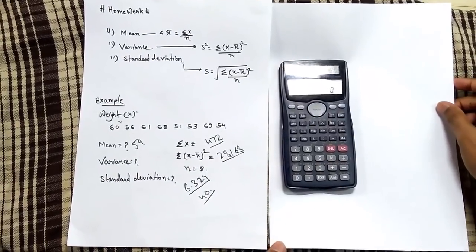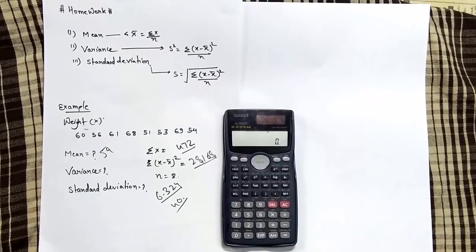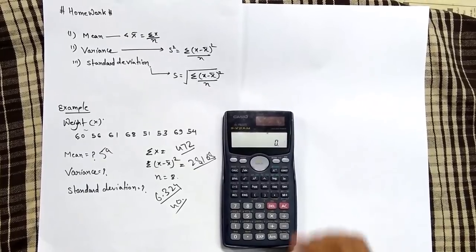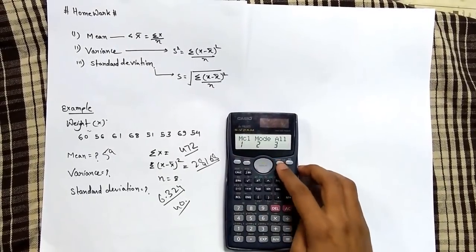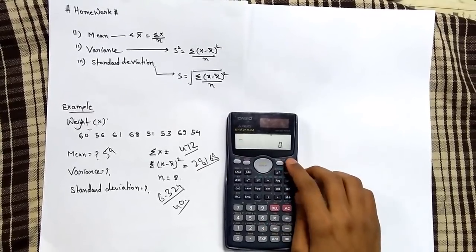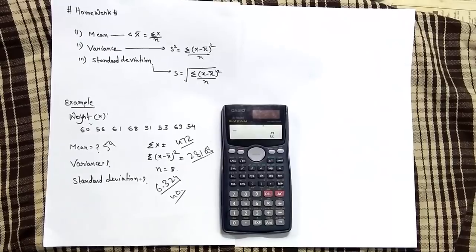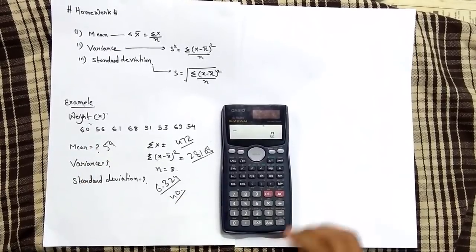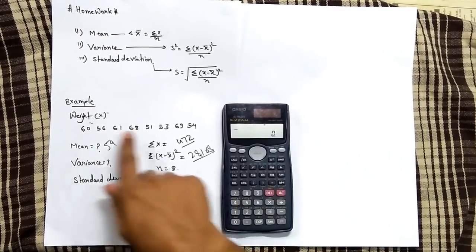First of all, clear your calculator by pressing shift, mode button, then press 3, then equal. Start by putting your values inside into your calculator.